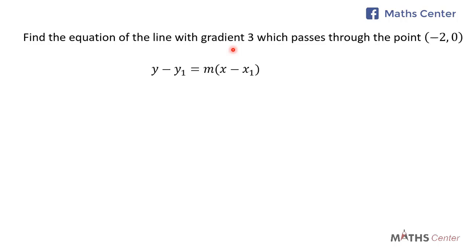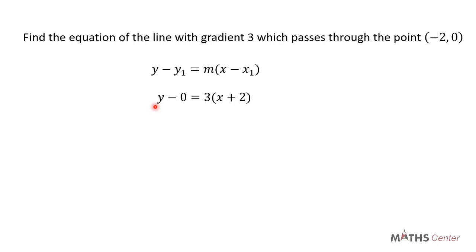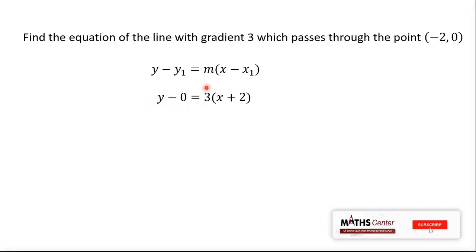Here m is the gradient of the line, and x1 and y1 are the coordinates of the point that falls on the line. So our m is the gradient, which is 3, our x1 is −2, and y1 is 0. Substituting into the formula, we have y minus 0 equals 3 times (x minus x1), where x1 is −2.